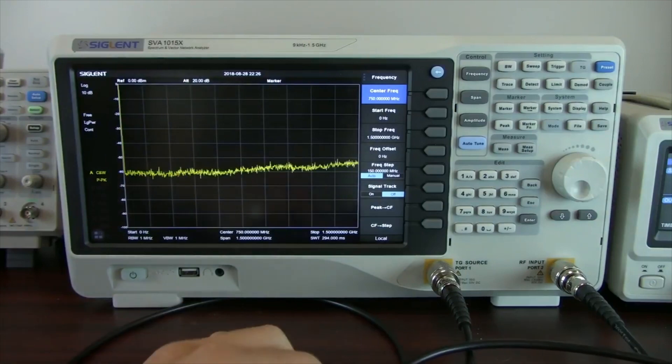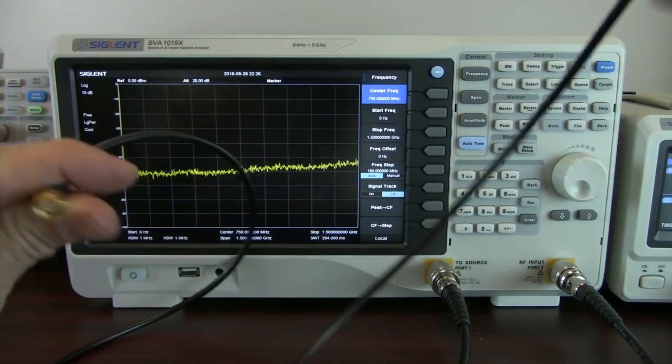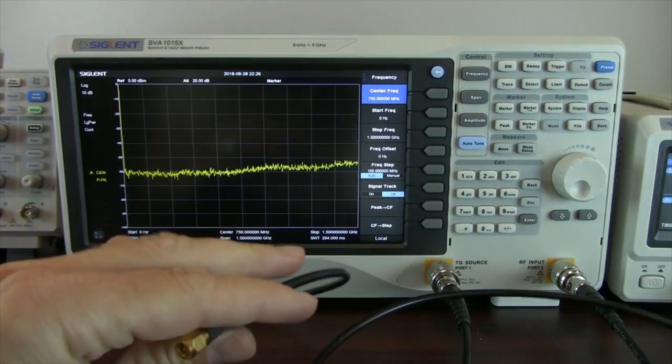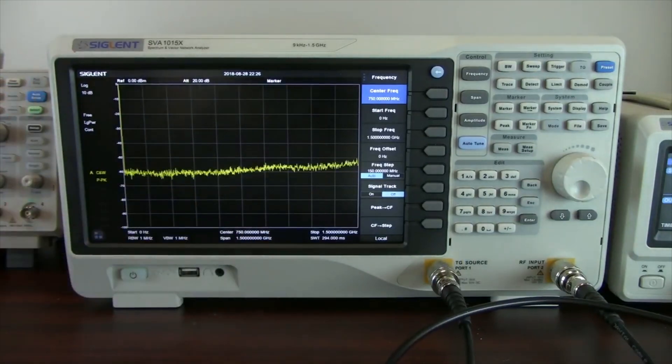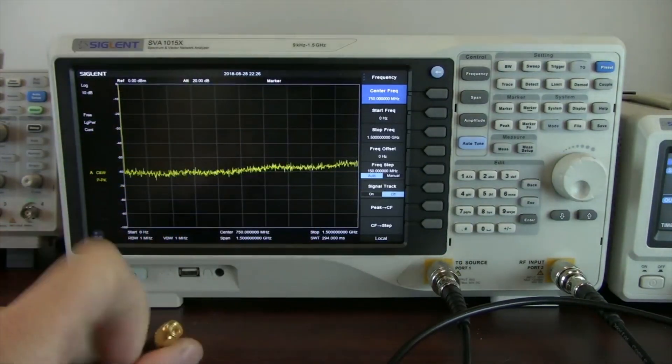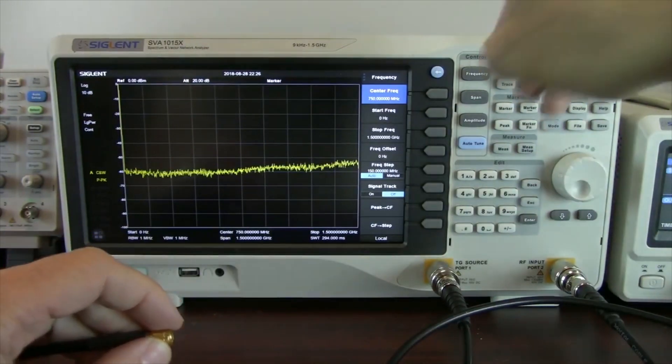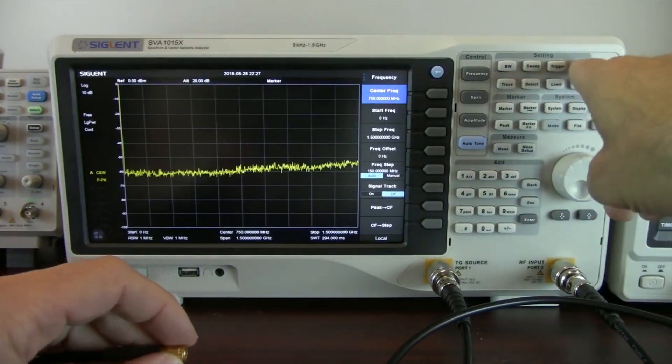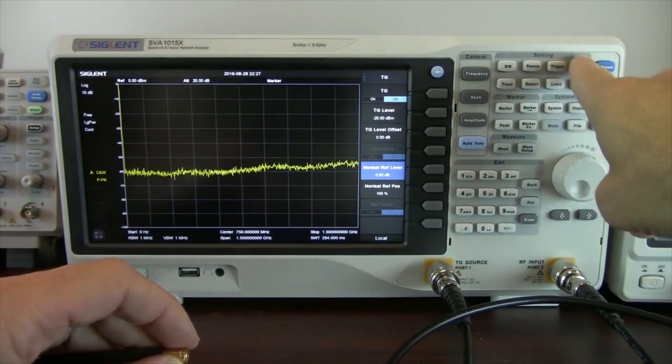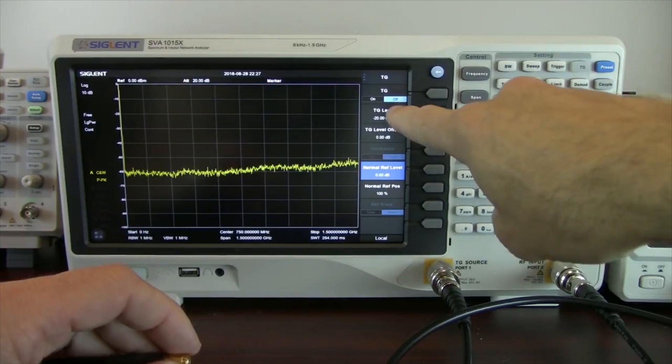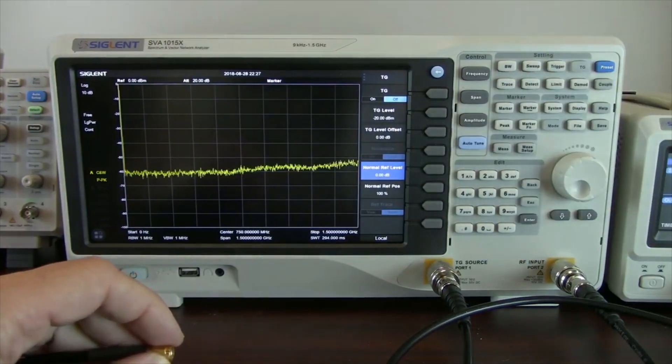So the first thing we're going to do is get rid of the errors involved with the cabling before we connect anything up. We have our tracking generator source, and we're actually going to be knocking down the signal a little bit. The spectrum analyzer tracking generator can go to minus 20 dBm.